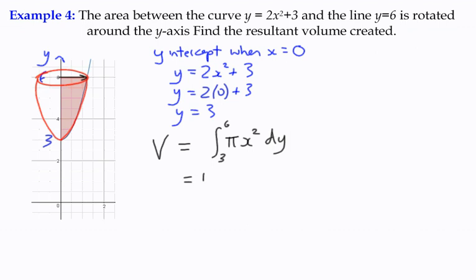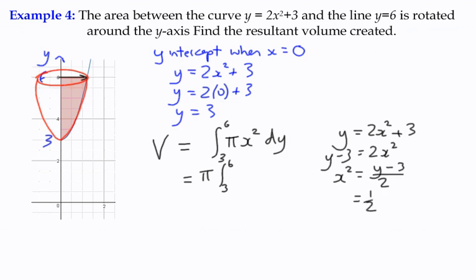Again, pi is a constant term, so we can keep that out of the integration. And we need a function in terms of x-squared. Well, fortunately, that's not so difficult to do. If we were to subtract 3 from both sides, we get that, and then divide through by the 2, and we get x-squared equals y minus 3 over 2, or a half y minus 3.